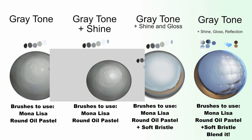With gray tone plus shine, the added shine gives the gray tone a bit of brightness to the surface so it starts to appear more metallic. To do it, use light pressure strokes with the Round Oil Pastel brush.